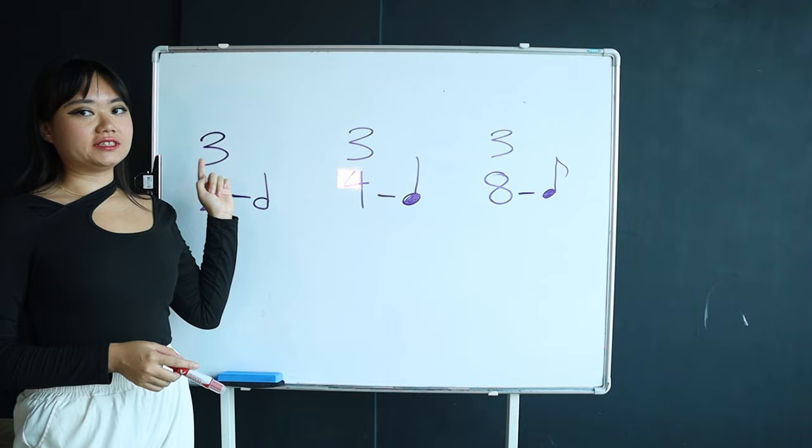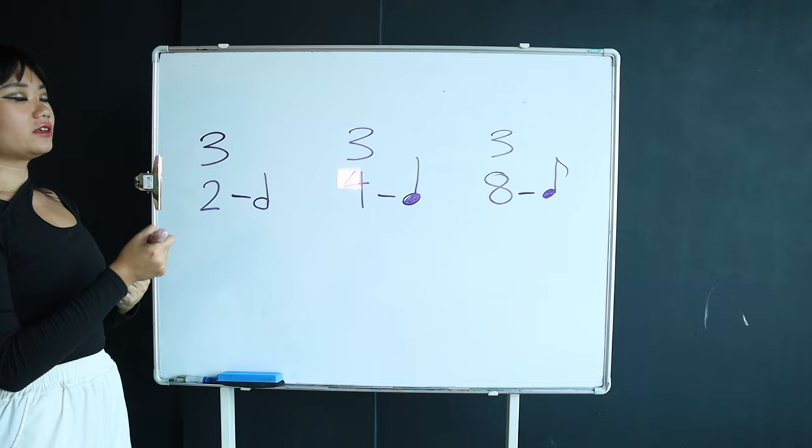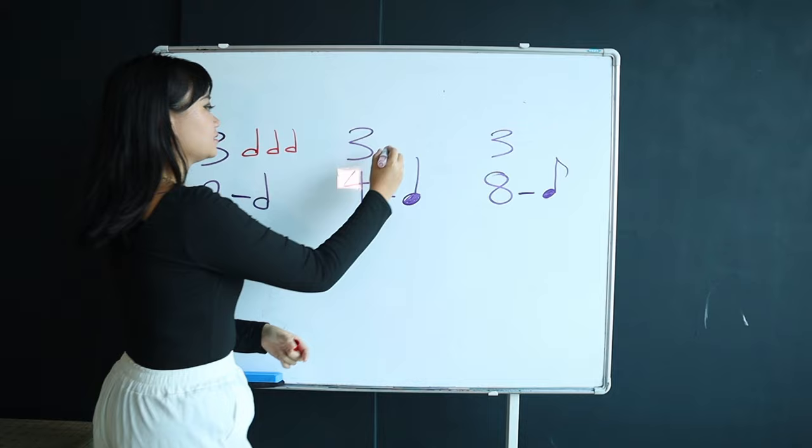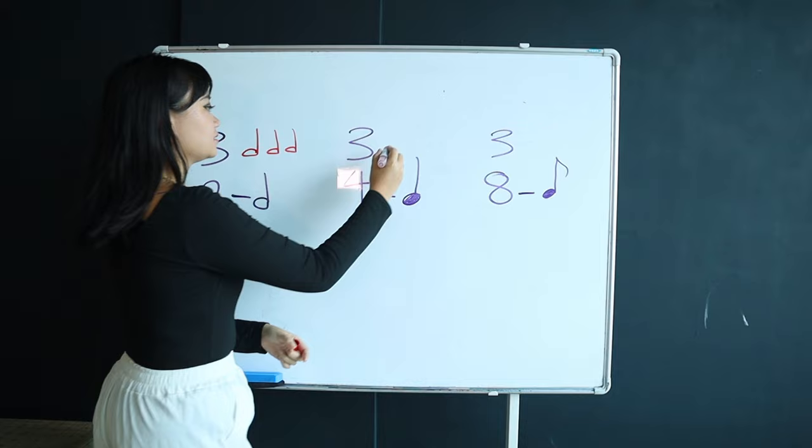So, since the top number of the time signatures tell us the number of beats in the measure, this means that there are going to be three half note beats. This means that there are going to be three quarter note beats. And this means that there are going to be three eighth note beats.